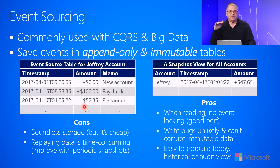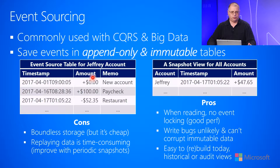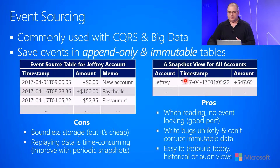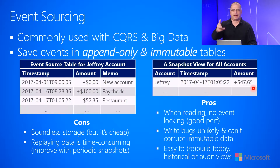All these entries are immutable, and they retain an accurate history of exactly what happened. If somebody asks what is the balance in the bank account, you could go to this table and run an algorithm over all of these entries to figure out the current balance. But that can be very time-consuming. So a lot of times you'll also have a snapshot view of all accounts. Here I have one row for Jeffrey's account, with the latest timestamp for April 17th. Every time I add an entry, I am also modifying the amount in the snapshot, so we can very quickly return the current balance.